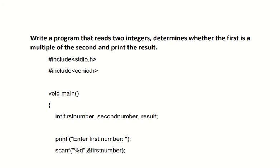First of all for this program we have used two header files that is #include <stdio.h> and #include <conio.h>, after that void main function and open the bracket. Now here as the program heading is to determine whether the first number is multiple of second number and we have to print the result also.